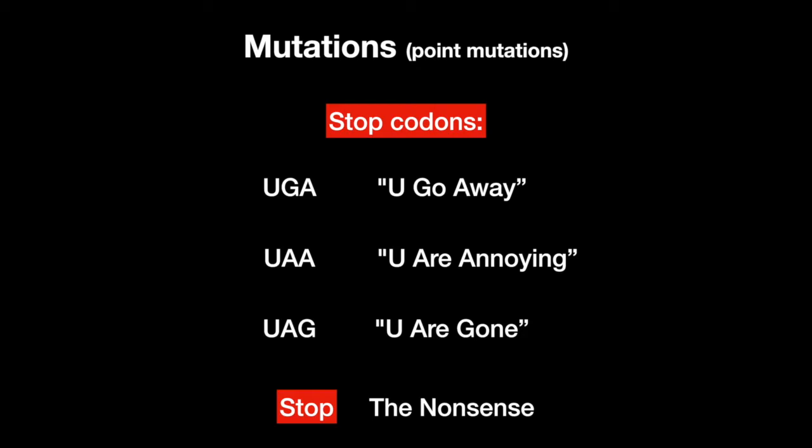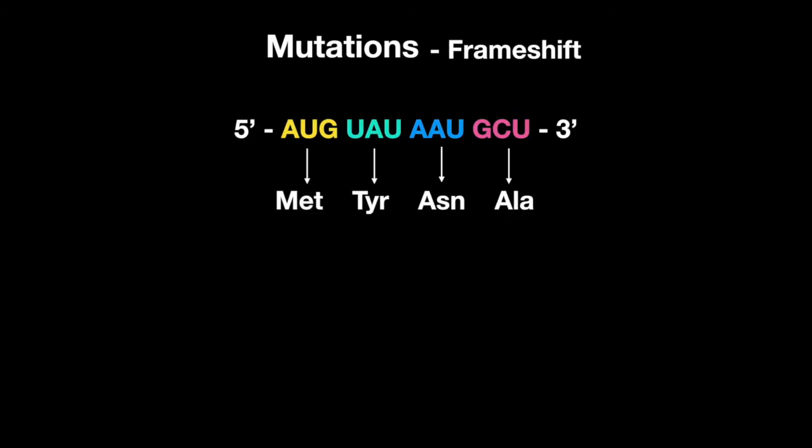Now, let's look at the other kinds of mutations. A frameshift mutation is a mutation in which a nucleotide is added or deleted from the sequence. Because DNA is read by the three-letter codons, by removing or adding nucleotides, the nucleotides downstream of the addition or deletion will all be read incorrectly.